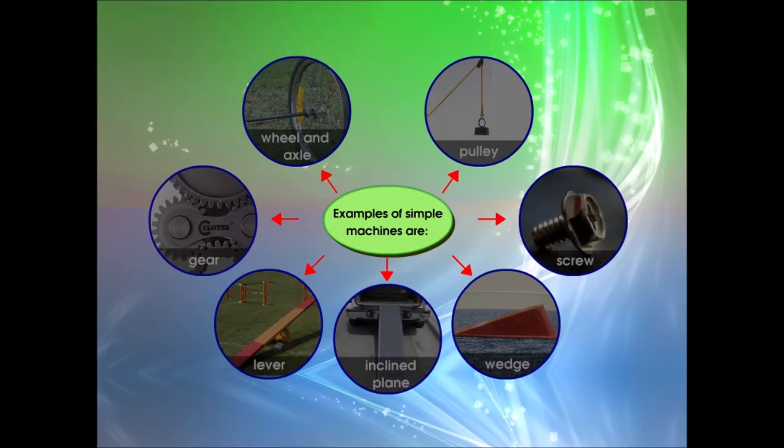Can you give examples and explain simple machines? There are seven types of simple machines. Can you identify them? Let us explore them one by one.